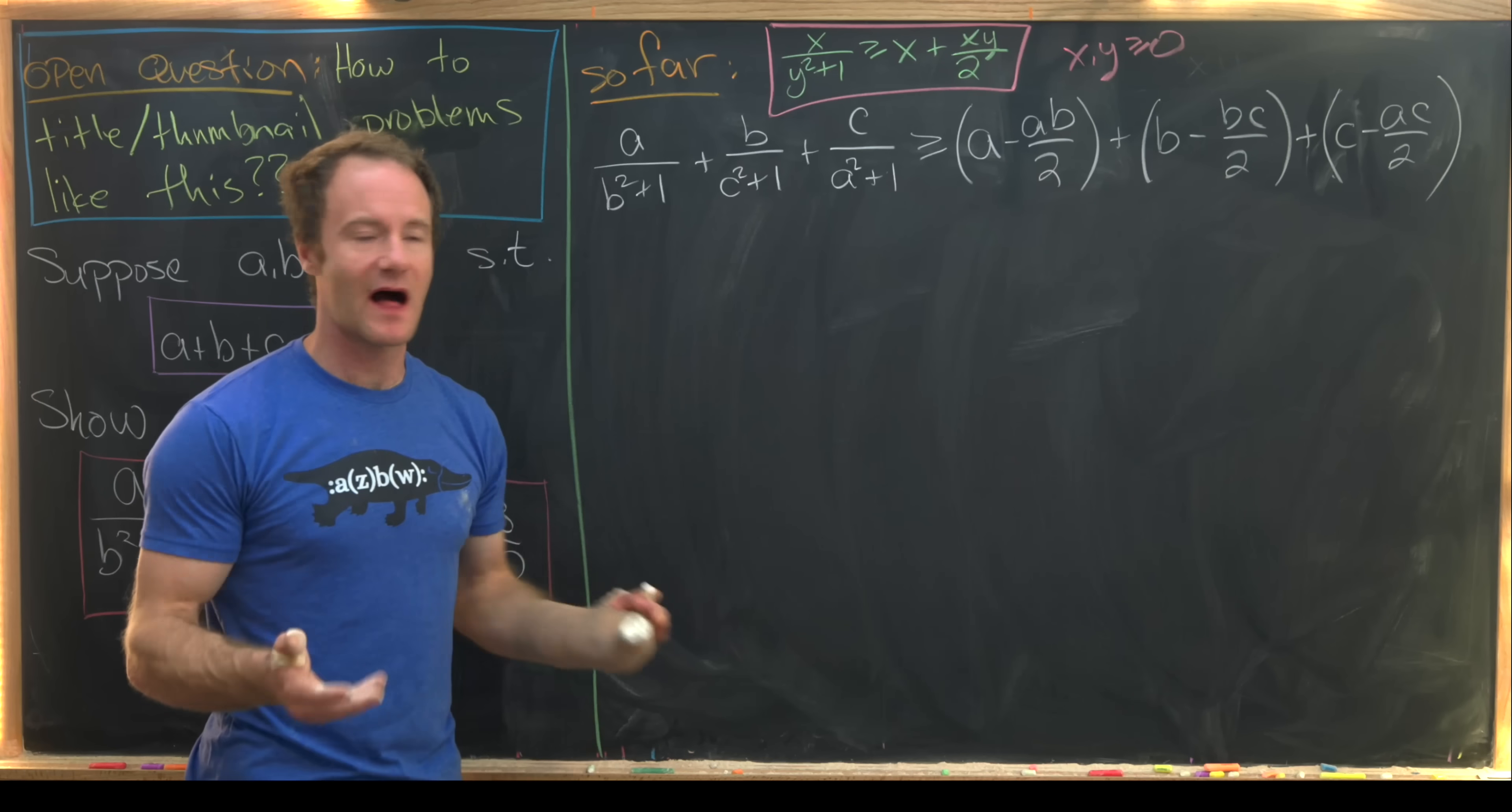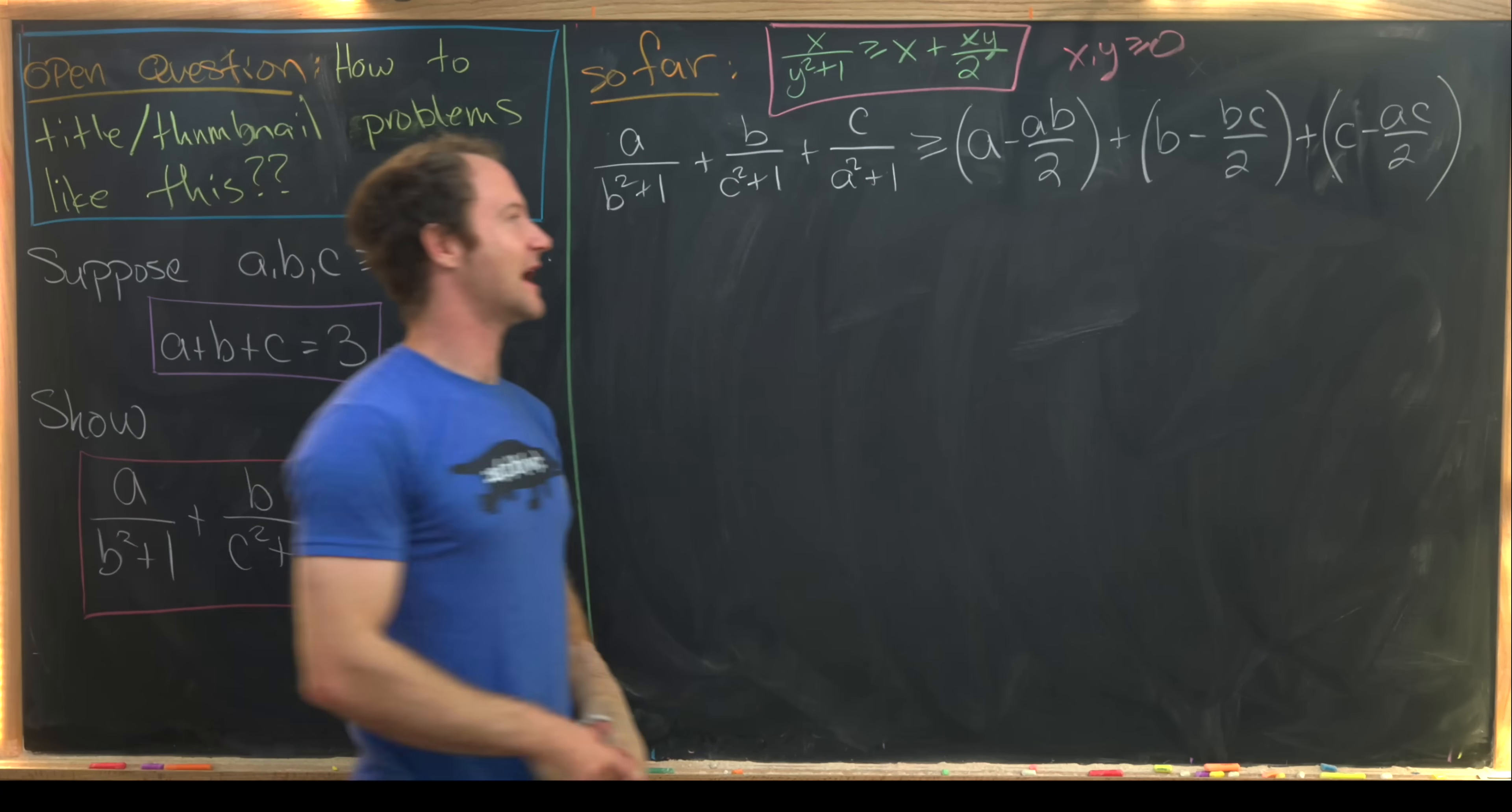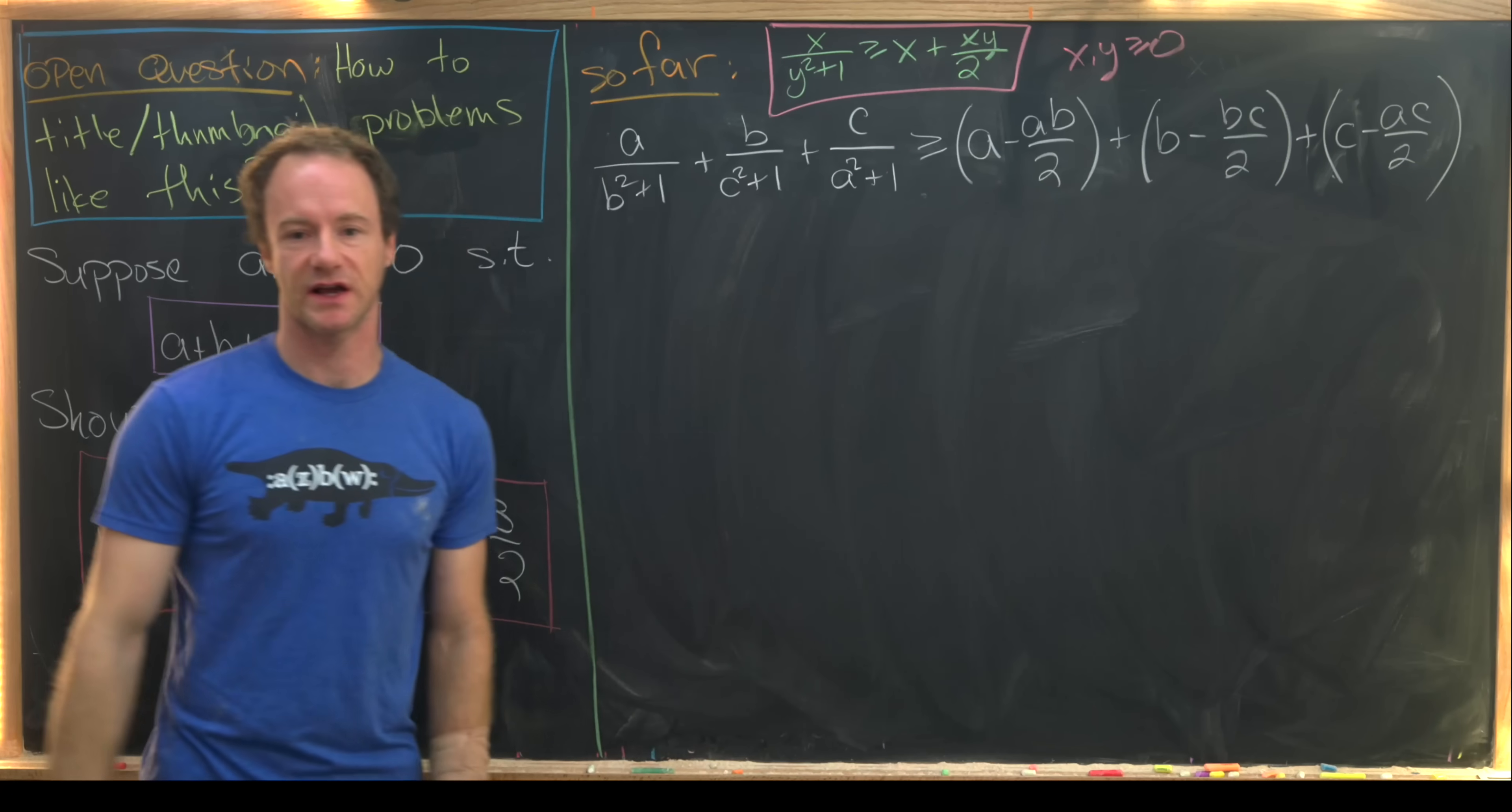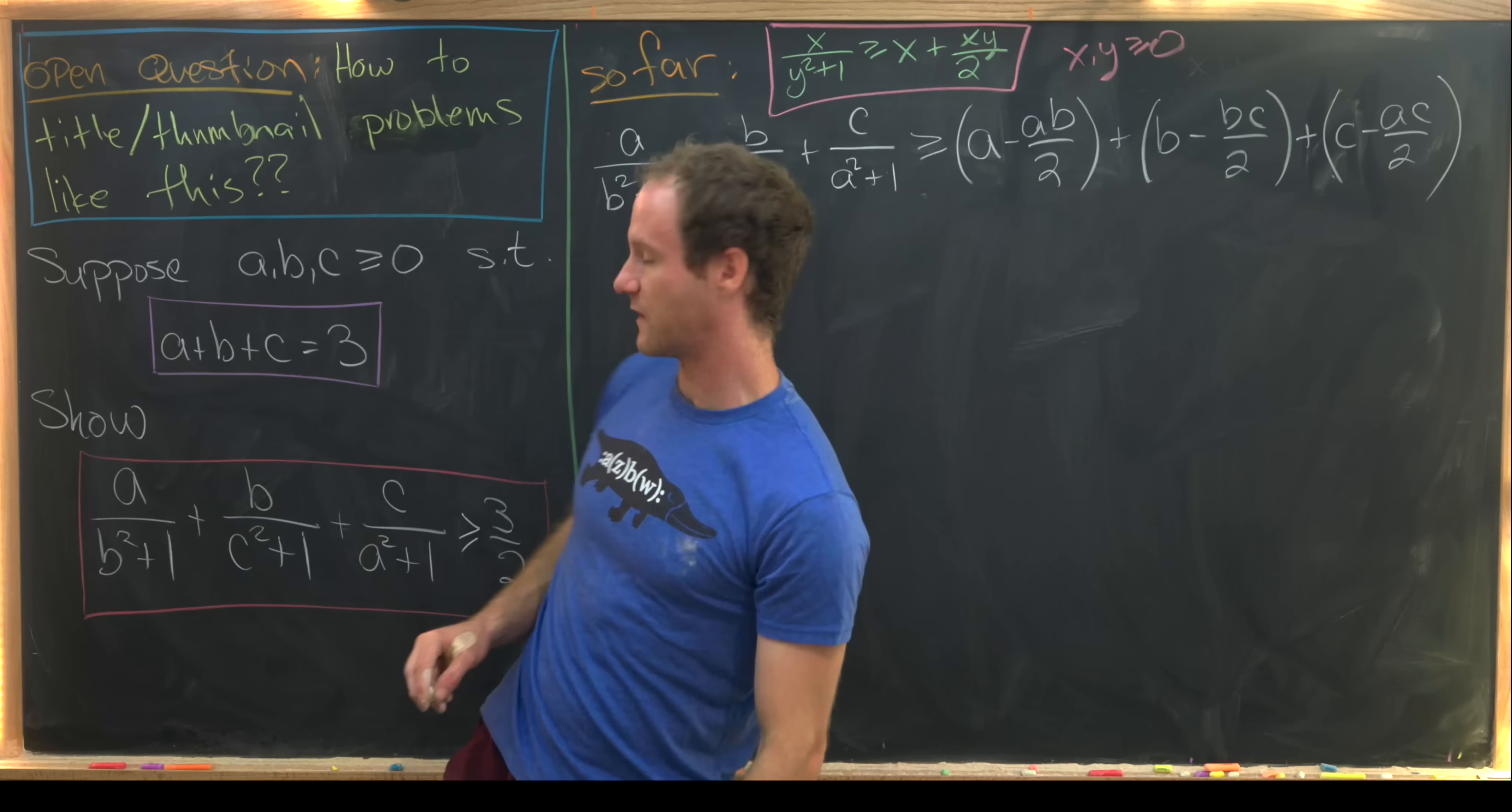Now we can apply that to these three objects that make up the left-hand side of our would-be inequality. And that gives us an inequality involving these three new objects. Now we want to start trying to put those together into something which is obviously bigger than 3 over 2.